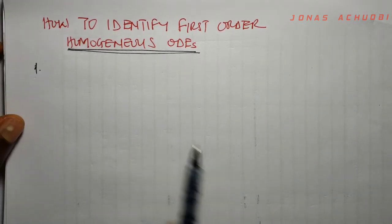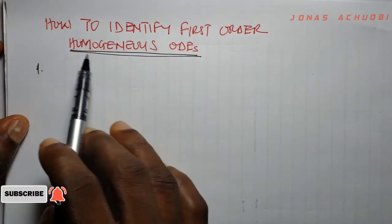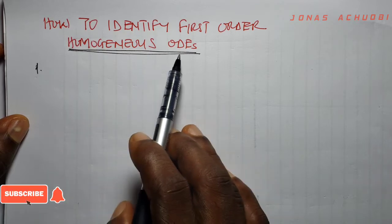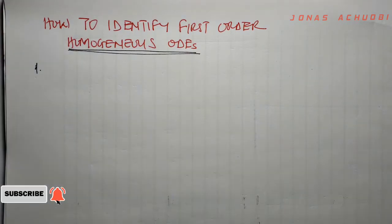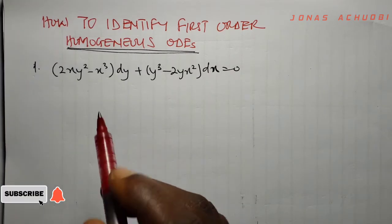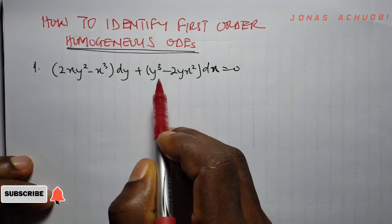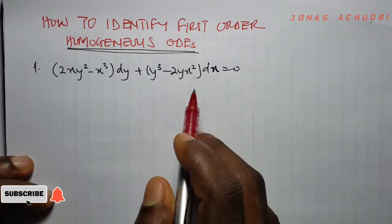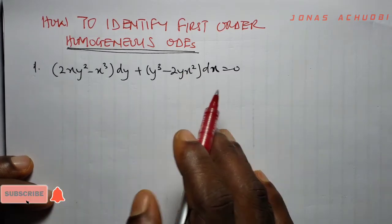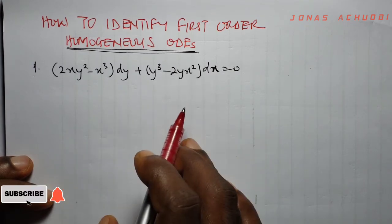Method one. An ordinary differential equation shall be called homogeneous if every term of that ODE has the same degree. For example, let us consider the following ODE: we have (2xy² − x³)dy + (y³ − 2yx²)dx = 0. This indeed is a first-order ODE, and we want to check if this ODE is indeed homogeneous or not.